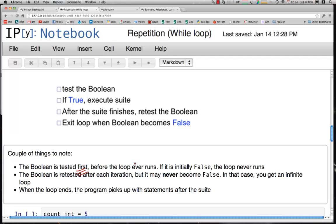Second, the Boolean is retested at the start of every iteration. It should be the case, but it might be true that it never becomes false. If that is true, if the Boolean never becomes false in your loop, then you get an infinite loop. These are both bad situations.